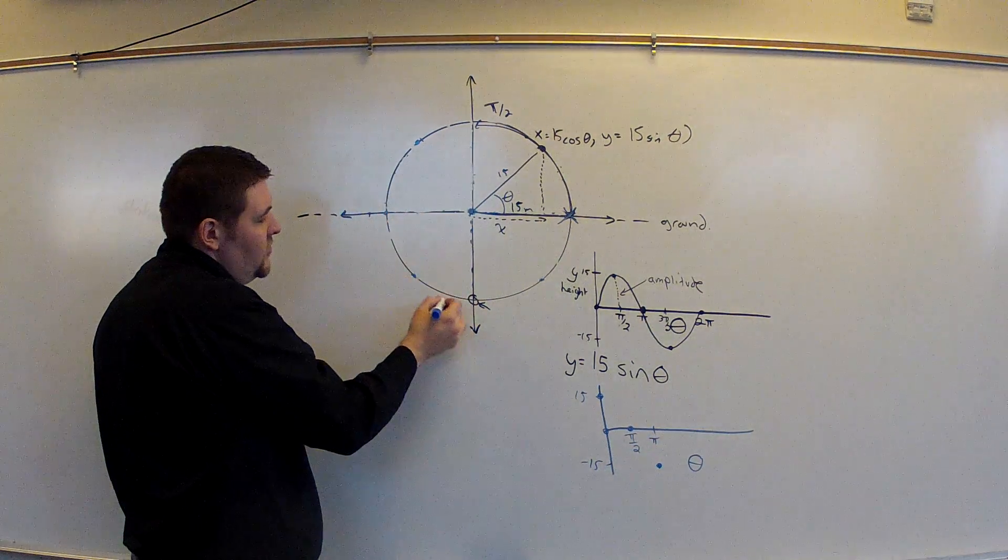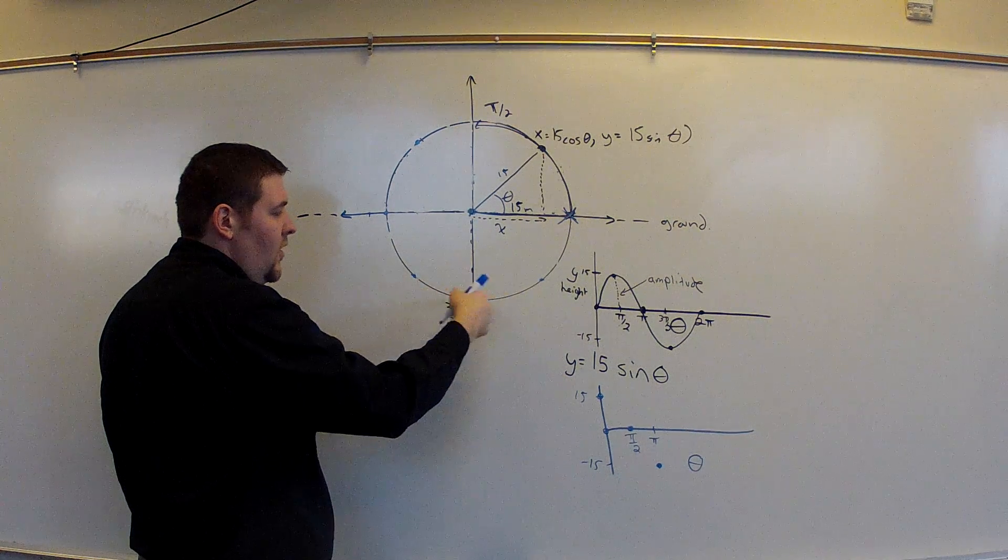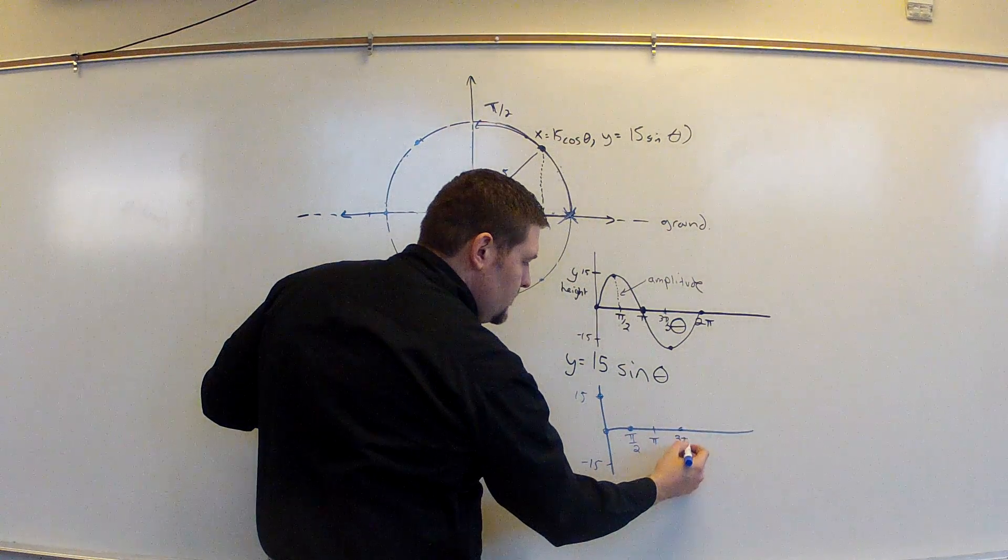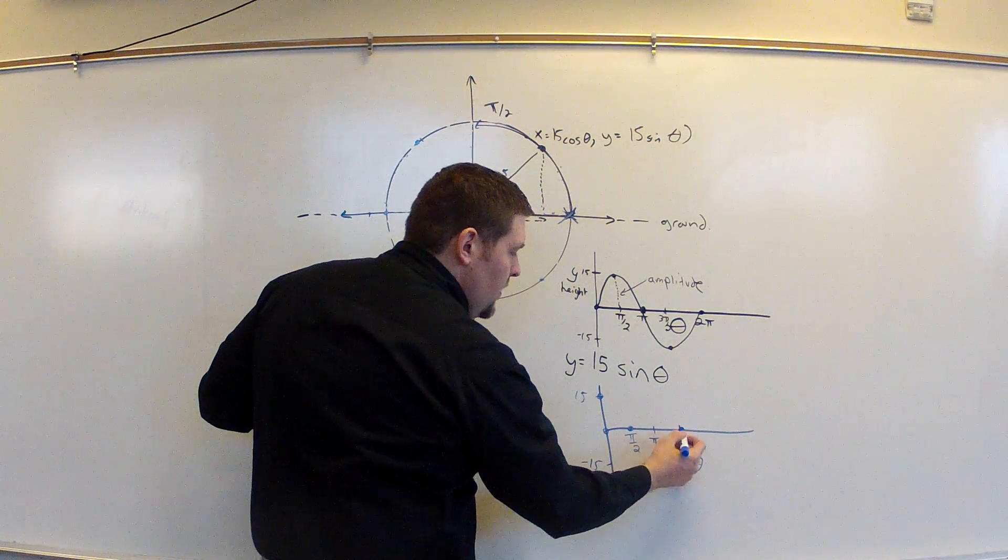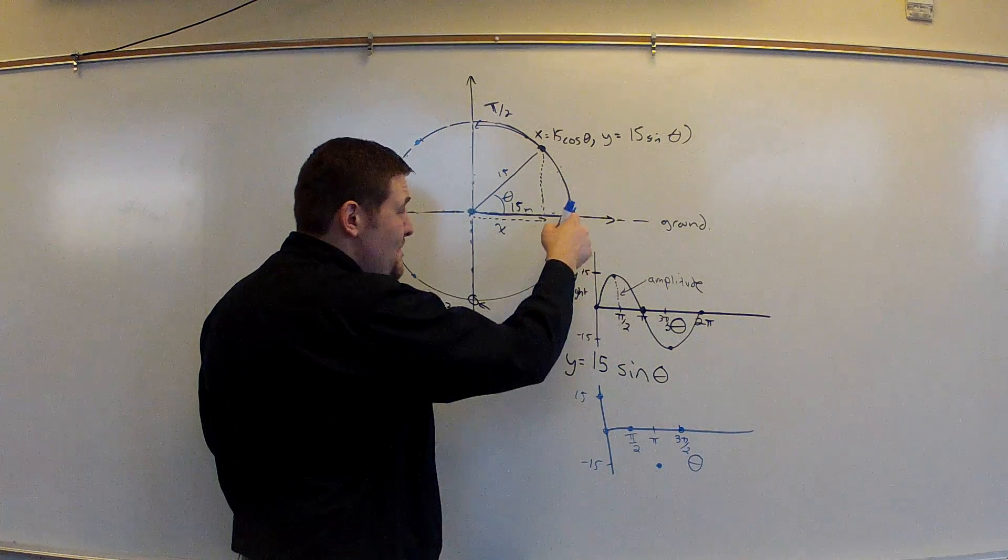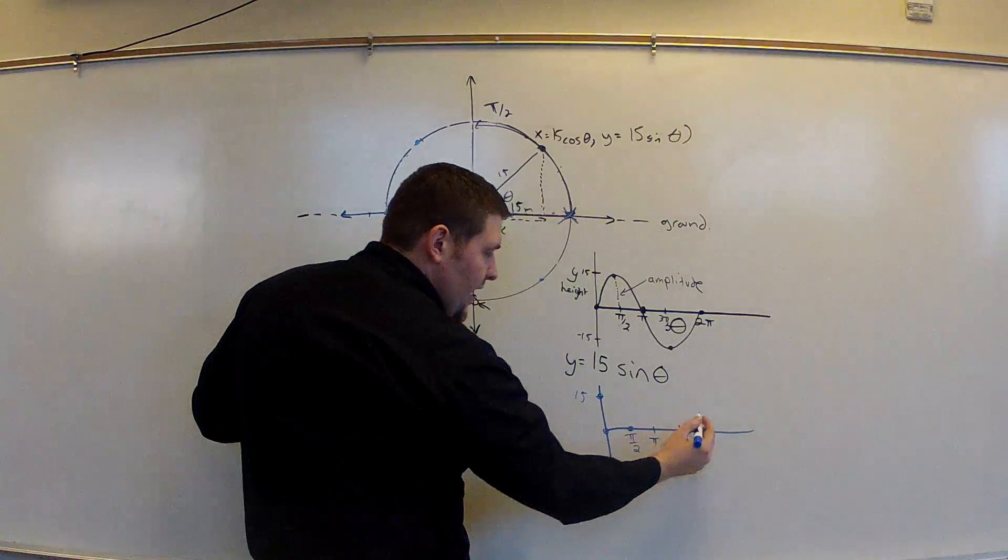And if I kept going to 270 degrees or 3 pi over 2, I'm now again zero horizontal distance away from that vertical. So this puts me back at zero. And then lastly, if I go the full 360 or 2 pi, I'm again at the maximum distance I can get horizontally from the vertical, putting me at a height of 15.